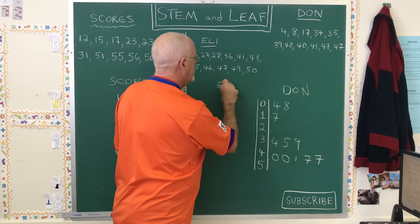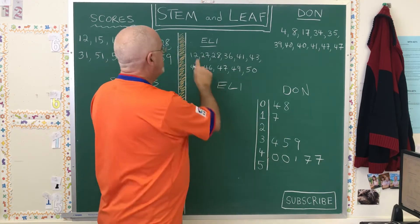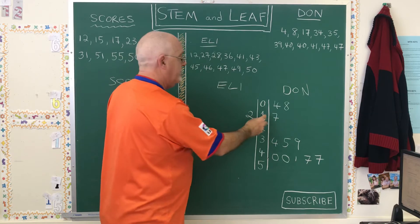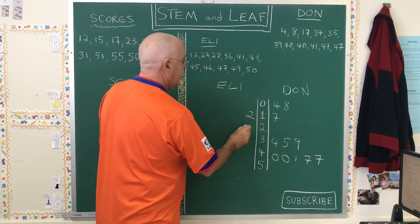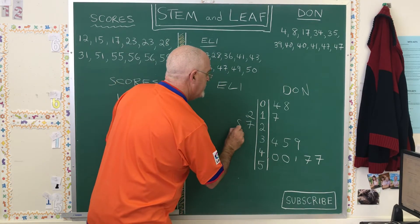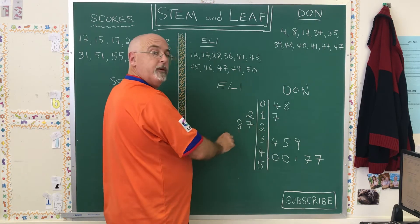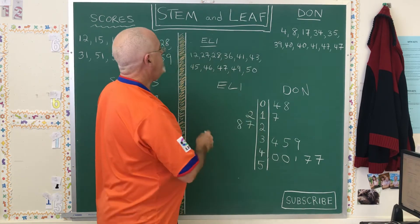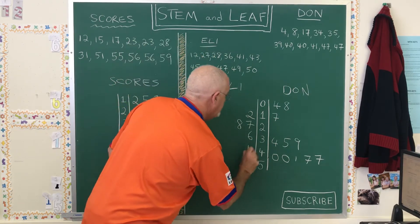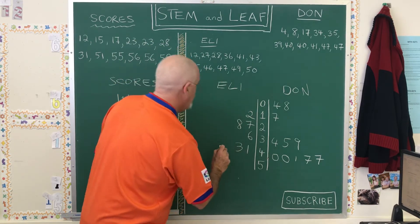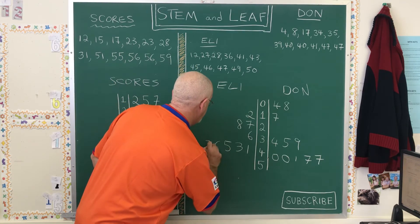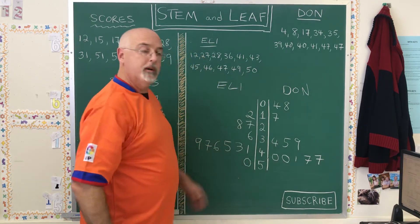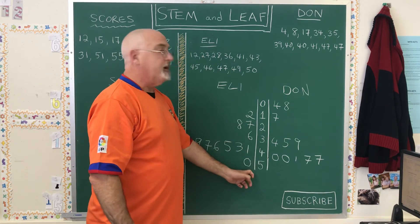Now Eli is going to be on this side, and his numbers will look a little different. He doesn't have any one-digit numbers, so his lowest number is a 12. I write the 2 here beside the 1, and I have to read this backwards from right to left — so the first number for Eli is 12. The next number is 27, then 28. I'm putting the 28, which is bigger than 27, further to the left, because I'm reading from right to left: 12, 27, 28. Then 36, 41, and lots of numbers in the 40s: 43, 45, 46, 47, 49. And we have a 50 — there's a student in Eli's class who got a perfect grade. That's why I have to have a 5 between the bars in this table, because one of the data sets had a number starting with 5.